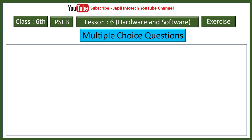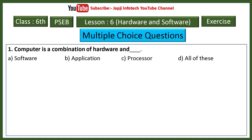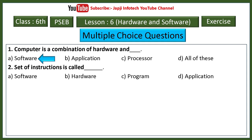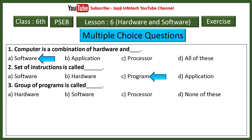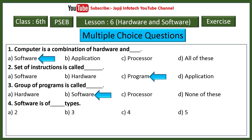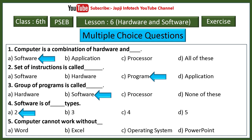Multiple choice questions in lesson six. First: computer is a combination of hardware and software. Second: a set of instructions is called a program. Third: a group of programs is called software. Fourth: software is of two types. Fifth: computer cannot work without an operating system.